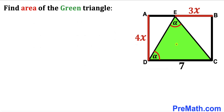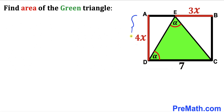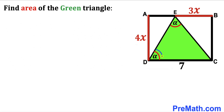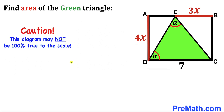Welcome to PreMath. In this video we have got this green shaded triangle ECD fully inscribed in a rectangle ABCD, as you can see in this diagram, such that the side length CD is 7 units. Moreover, this side length AD of this rectangle is represented by 4x, whereas this segment EB is 3x. Furthermore, this angle CDE is alpha, and likewise this other angle CED is alpha as well. Our task is to calculate the area of this green shaded triangle ECD. Please keep in mind that this figure may not be 100% true to scale. Let's get started.